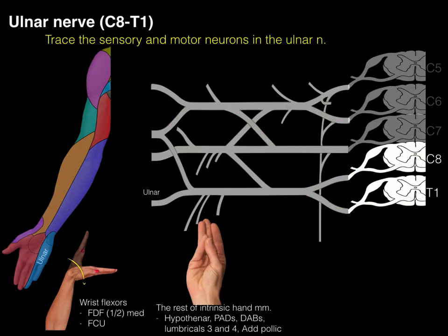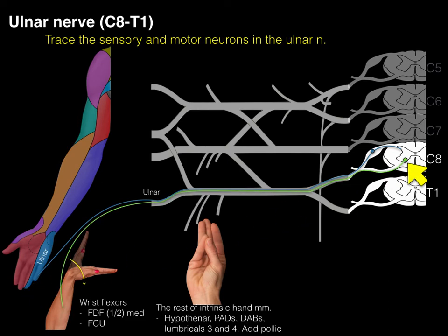For the ulnar nerve, sensory neurons from its cutaneous field trace back to the C8 dermatome. The C8 myotome level goes to the wrist flexors, and T1 goes to intrinsic hand muscles — primarily the hypothenar muscles, lumbricals, and so forth.